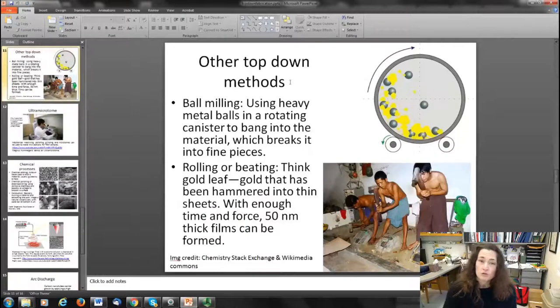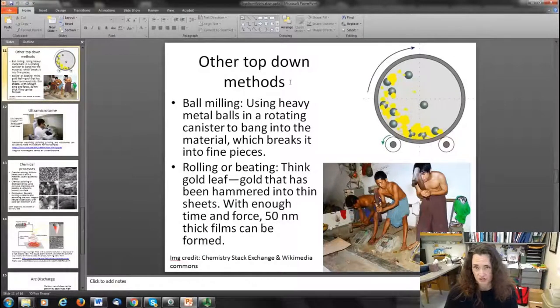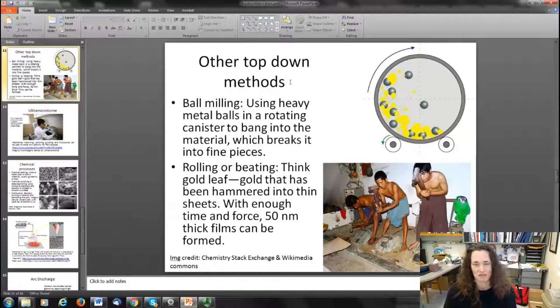Moving on from lithography, which is a really super important top-down method but by all means not the only one. There's lots of other top-down methods used to create nanoscale materials and objects. One of them is ball milling, which is really simple—you're just using heavy metal balls like ball bearings.